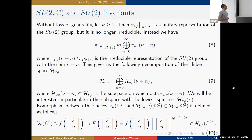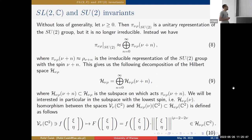Without loss of generality, we can assume ν ≥ 0, since representations with parameters (ν, ρ) and (−ν, −ρ) are equivalent. When π_{ν,ρ} is restricted to SU(2), the irreducible SL(2,C) representation becomes reducible as an SU(2) representation—it decomposes into a direct sum of SU(2) representations with spins ν, ν+1, ν+2, and so on, yielding infinitely many representations.